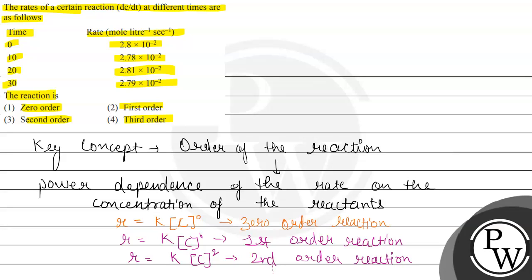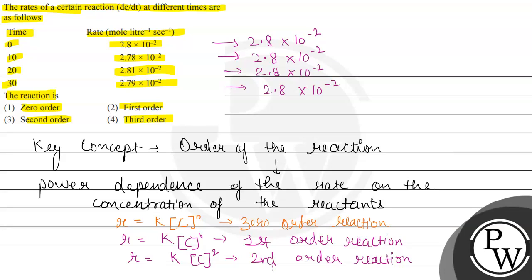Generally, rate is the change in concentration with respect to time. In this question, the rate is 2.8 × 10⁻², and after 10 seconds it is 2.78 × 10⁻², which when written to two significant figures is 2.8 × 10⁻². The next value 2.81 can also be written as 2.8 × 10⁻², and 2.79 can also be written as 2.8 × 10⁻². We can see that the rate is completely constant with respect to time, and this is only possible for a zero order reaction.